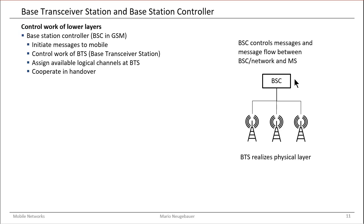Besides controlling the base transceiver station, the base station controller also has to cooperate in the handover. Handover means the mobile station is moving — for example, in a car or on a bike — through different cells, requiring connections to different antennas. Handovers happen and the base station controller has to support exactly this process. That is essentially the controlling part, the control of the lower layers, with the base station controller and base transceiver stations as the main components in this area of the network.